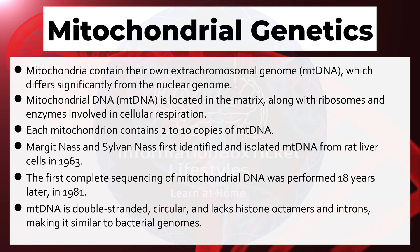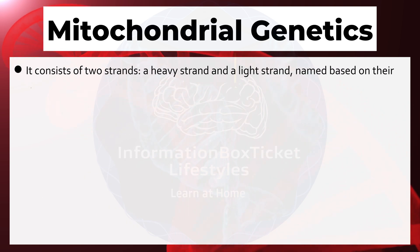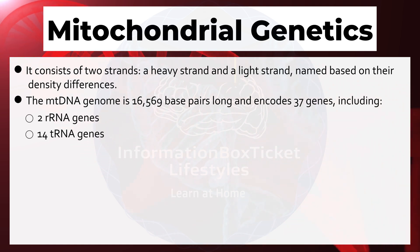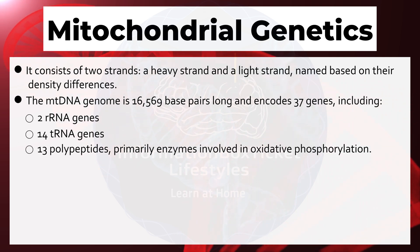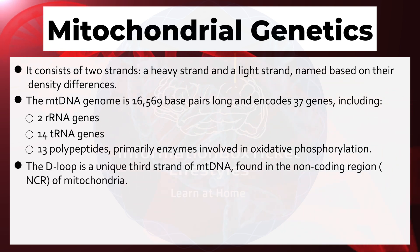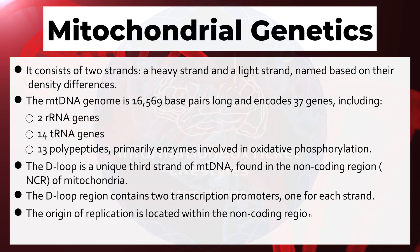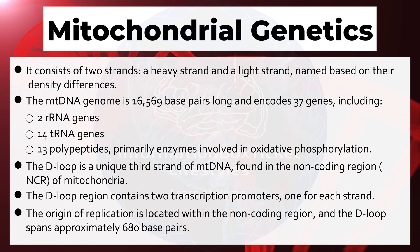mtDNA is double-stranded, circular, and lacks histone octamers and introns, making it similar to bacterial genomes. It consists of two strands — a heavy strand and a light strand — named based on their density differences. The mtDNA genome is 16,569 base pairs long and encodes 37 genes, including 2 rRNA genes, 14 tRNA genes, and 13 polypeptides, primarily enzymes involved in oxidative phosphorylation. The D-loop is a unique third strand found in the non-coding region of mitochondria, containing two transcription promoters — one for each strand. The origin of replication is located within the non-coding region, and the D-loop spans approximately 680 base pairs.